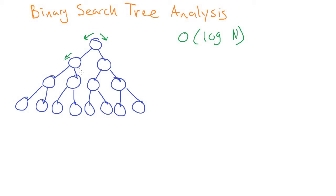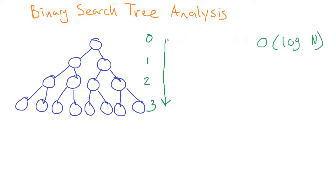Another way to look at this is to think about how many nodes we get per level. This is level zero, level one, level two, level three. We have two-to-the-level many nodes on each level. On level zero we have one node, level one we have two nodes, level two we have four nodes (two squared), and level three we have eight nodes (two to the three).